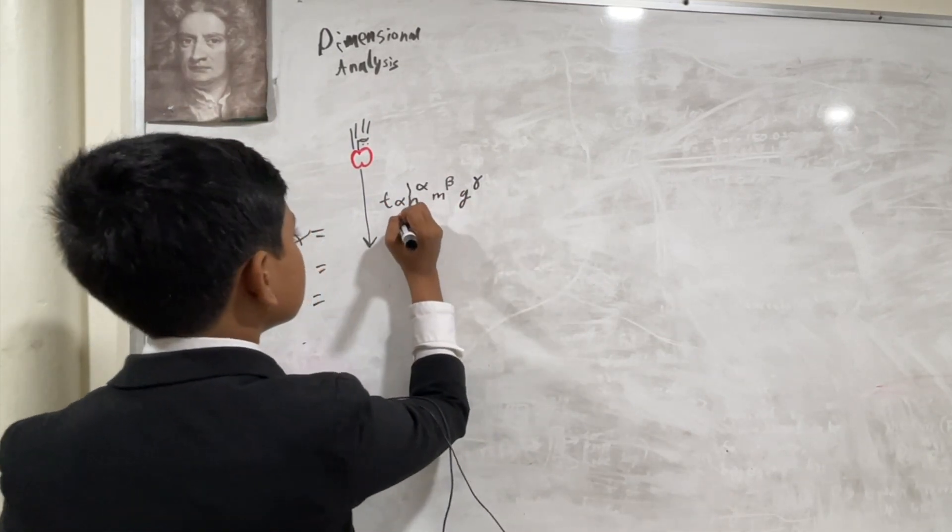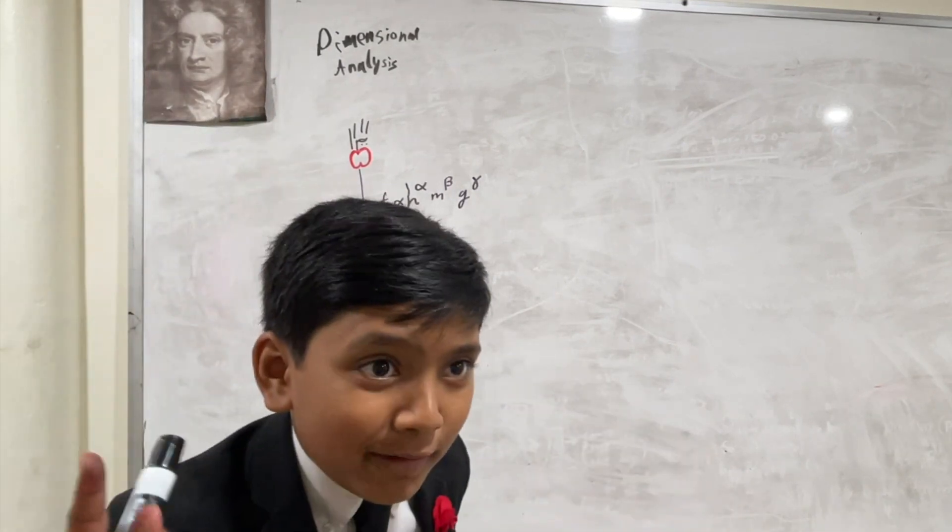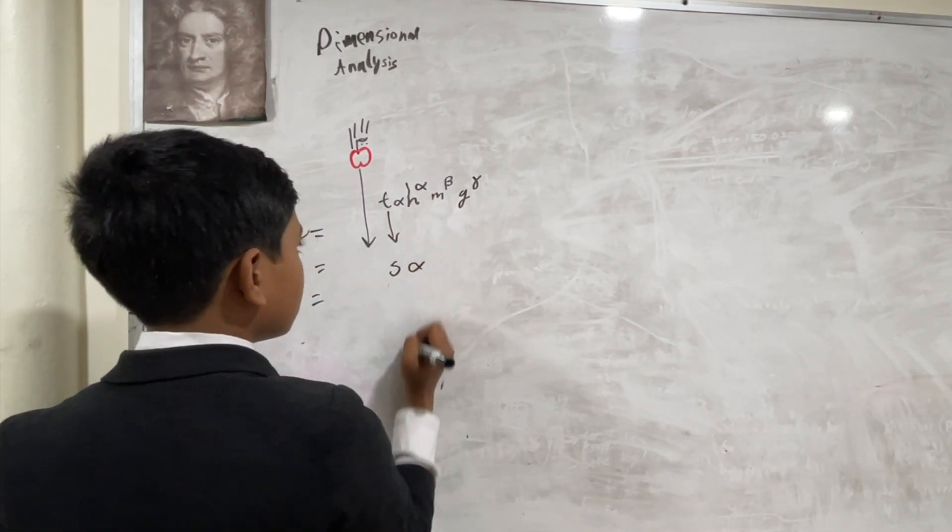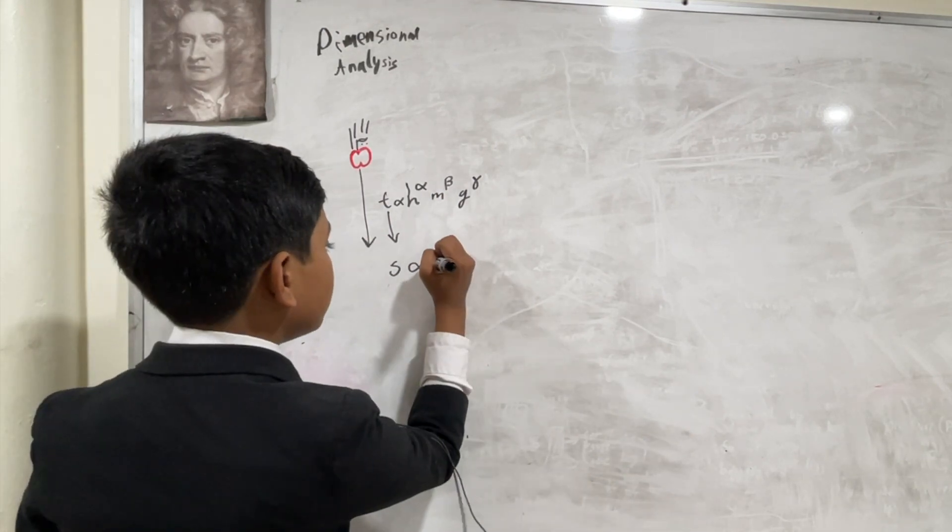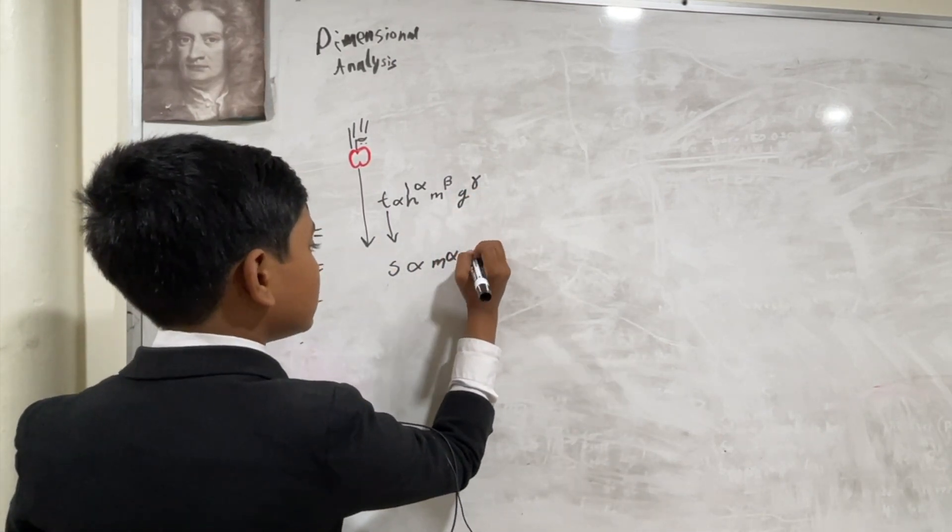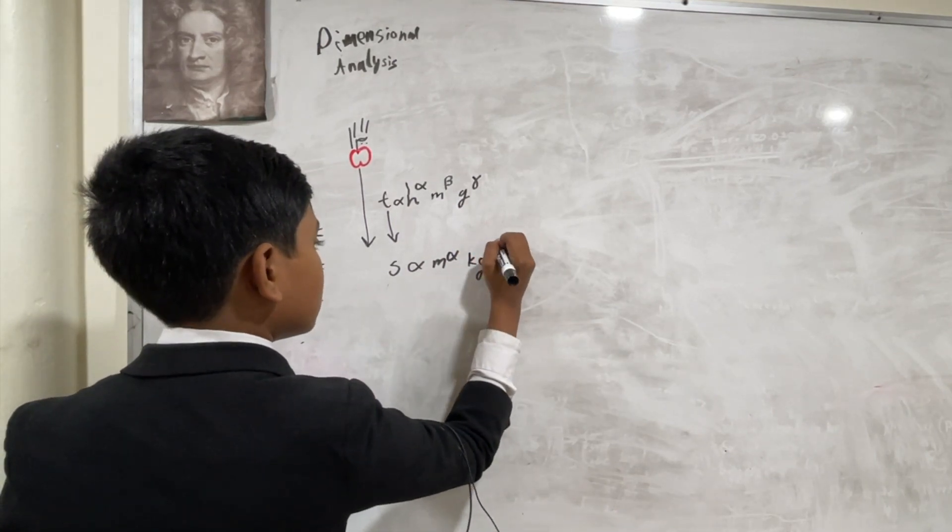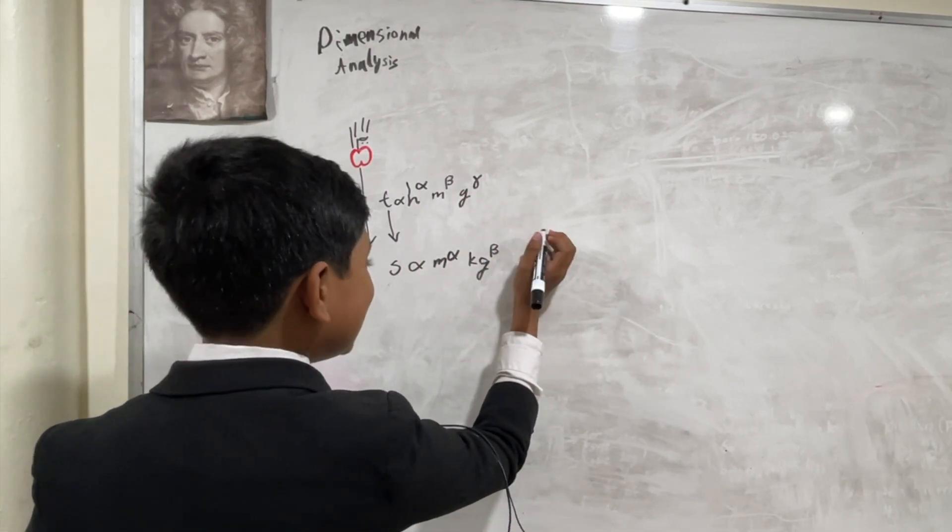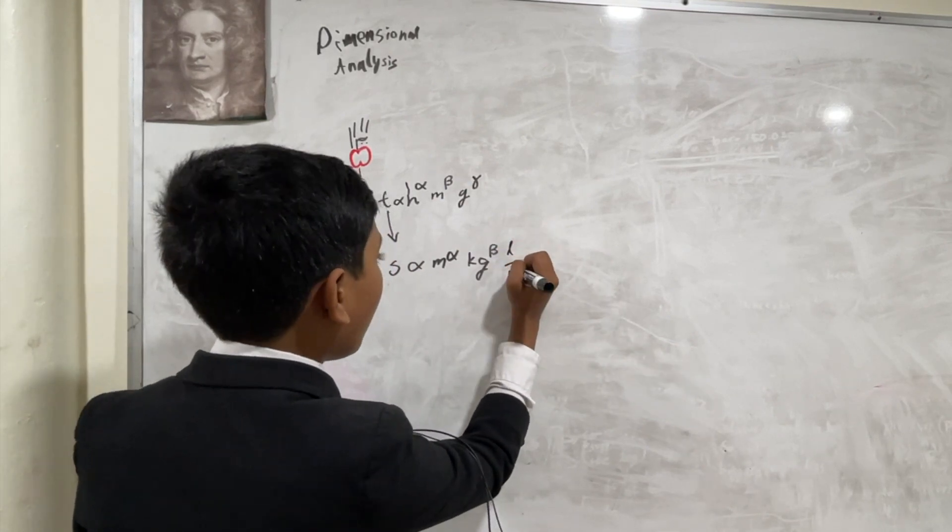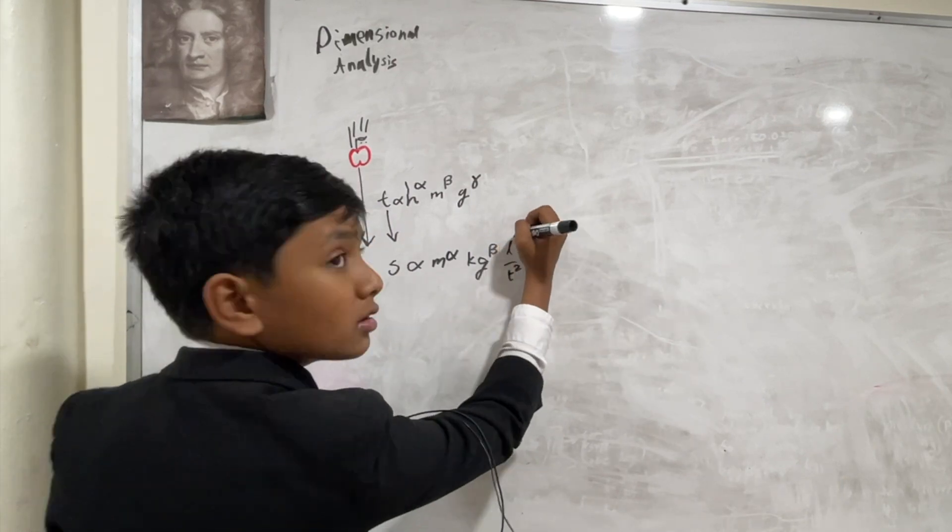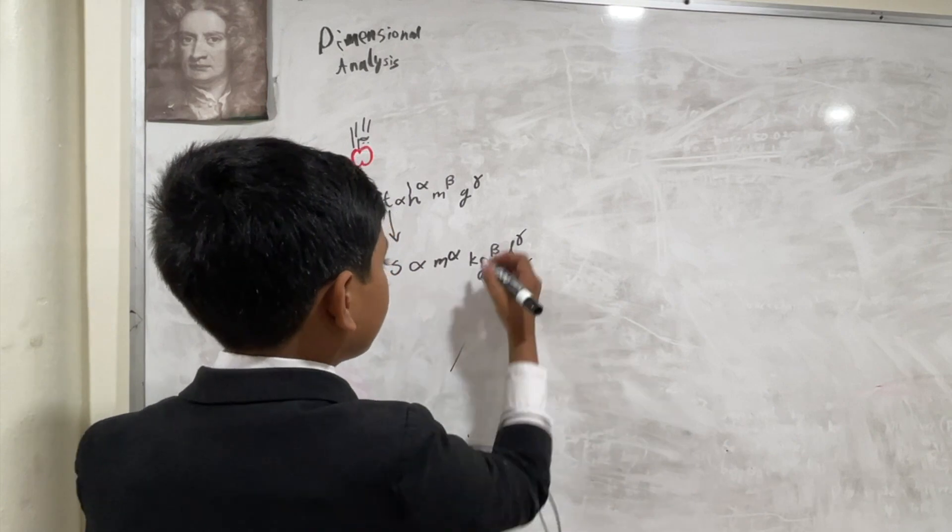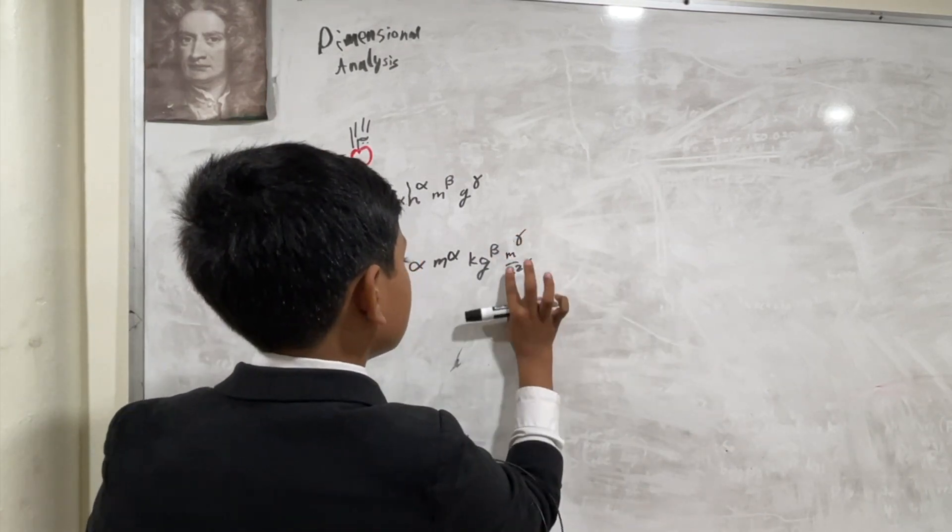So, first of all, remember, we're not going to be using variables. Throw them out the window. Instead, we have seconds on this side, and then height to the alpha, we're measuring height in meters. So, we have meters to the alpha, and then mass to the beta. So, times kilos to the beta. And then, times G. G has its own unit, meters over seconds squared, but that can be split into length over time squared. So, because we raised G to the gamma, then this will also be gamma. Now, we just have to replace the units. So, meters and seconds.